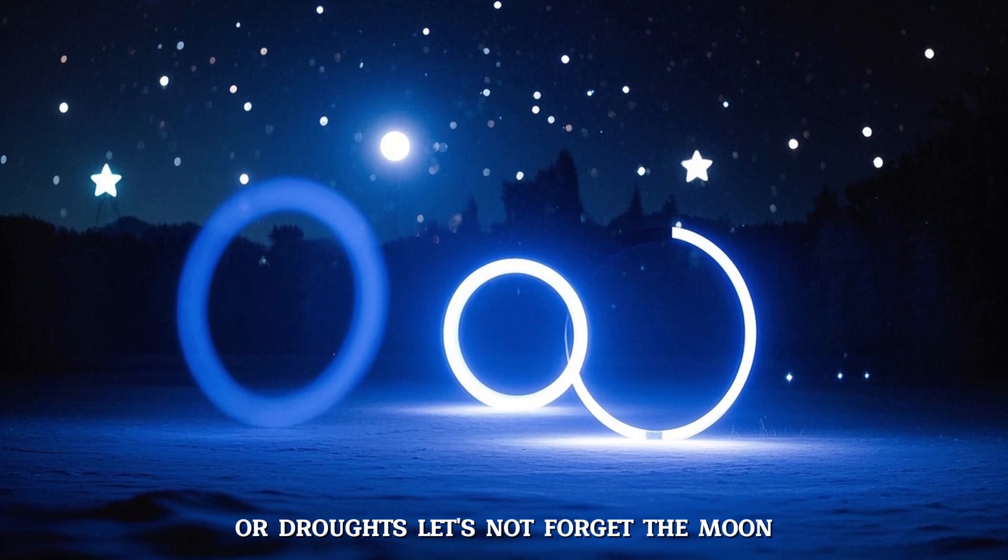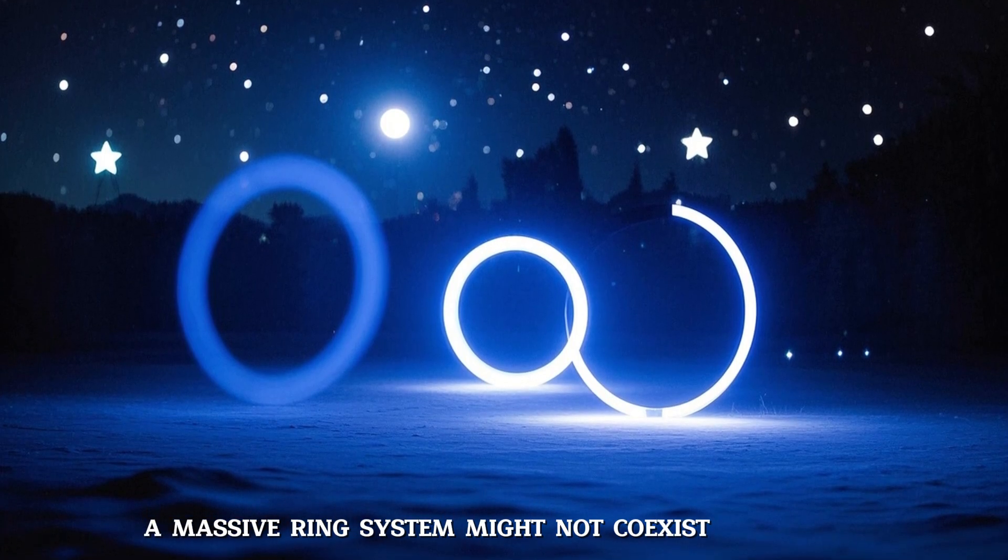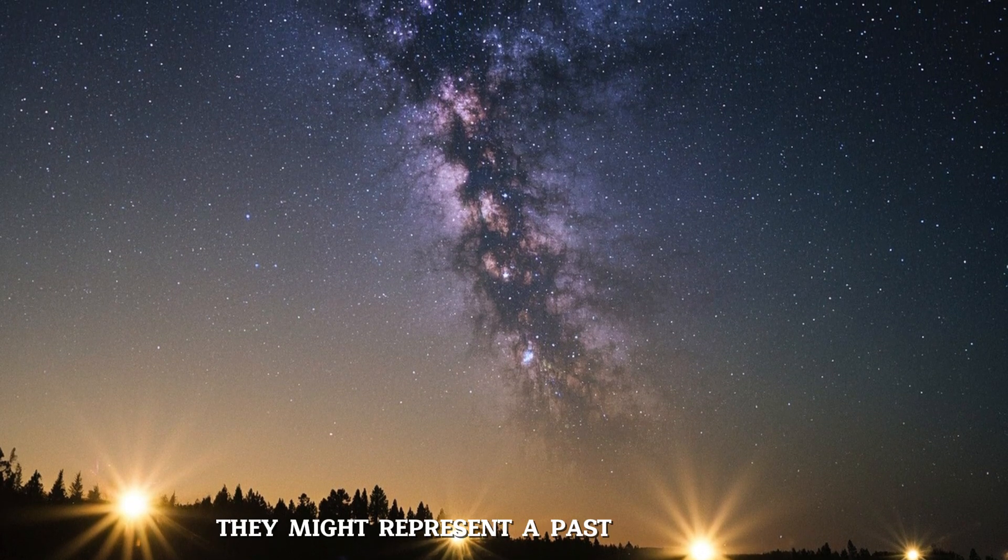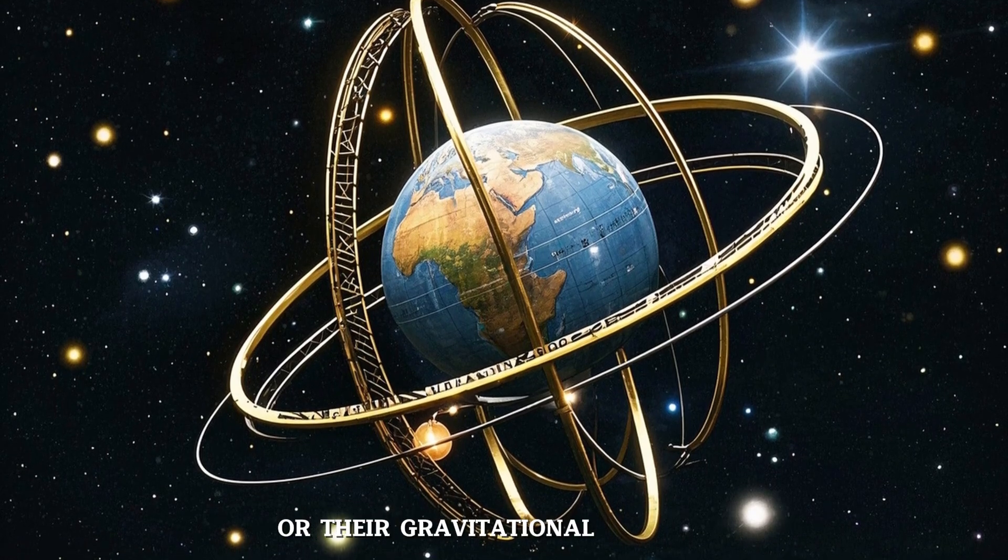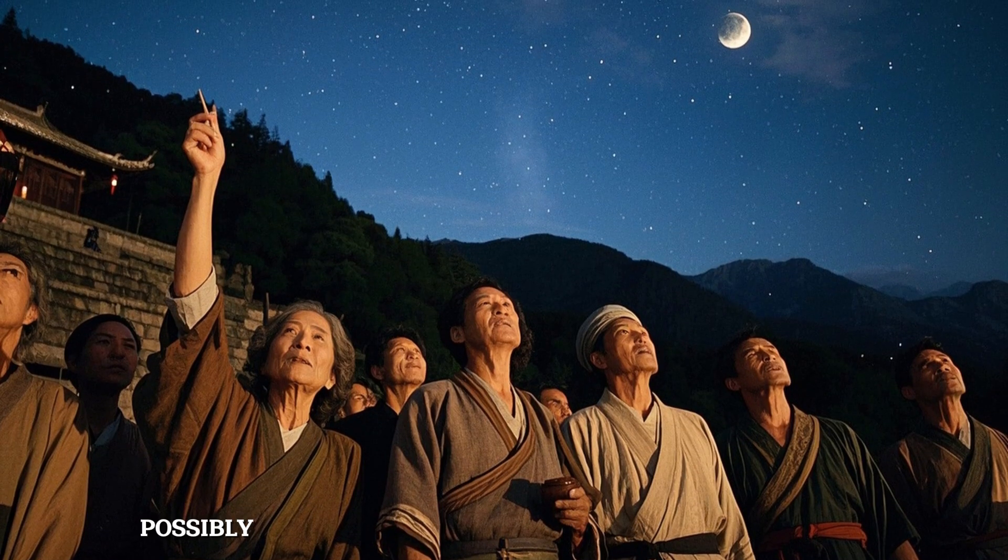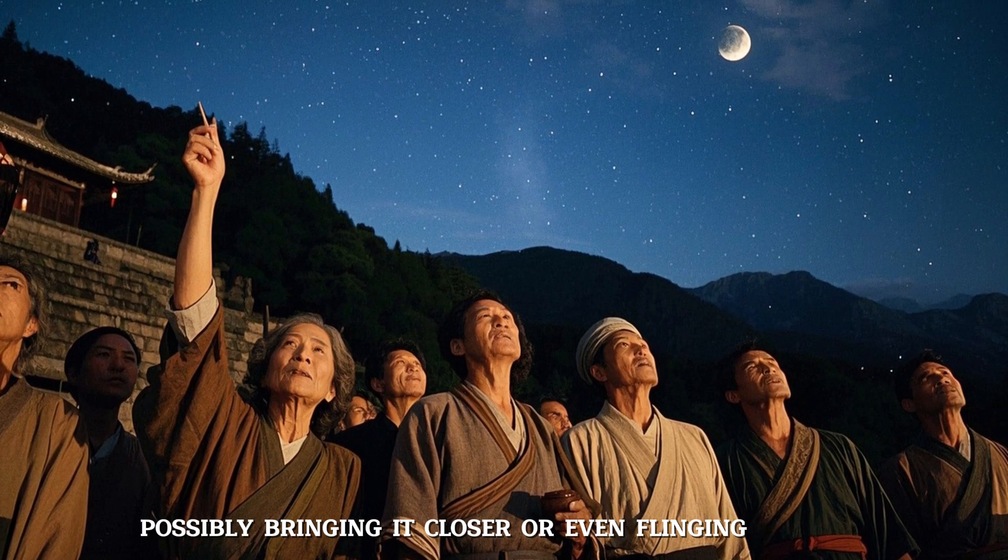Let's not forget the moon. A massive ring system might not coexist peacefully with our natural satellite. If the rings formed from a shattered moon, they might represent a past catastrophe. Or, their gravitational influence could destabilize the moon's orbit over millions of years, possibly bringing it closer, or even flinging it away.